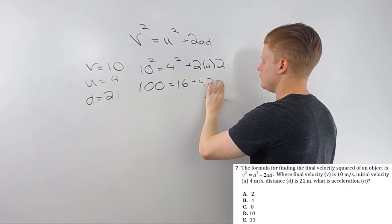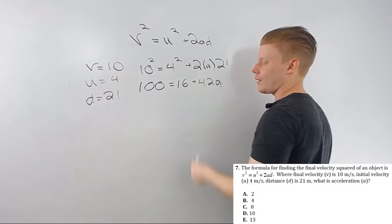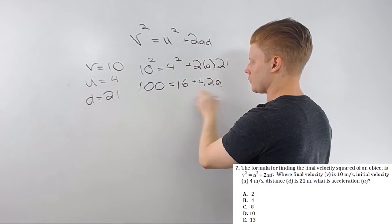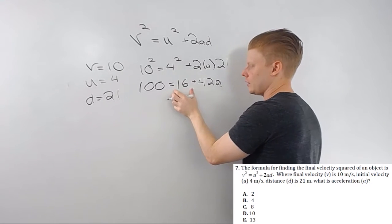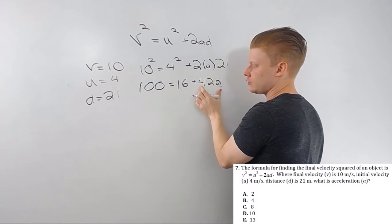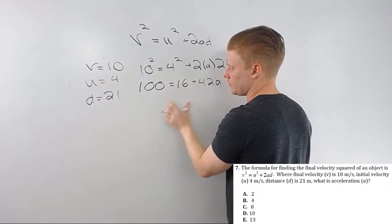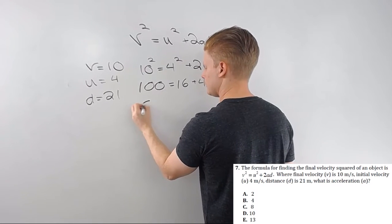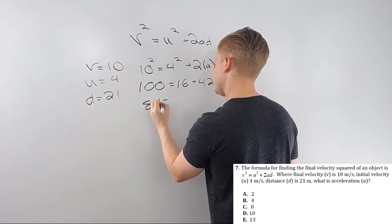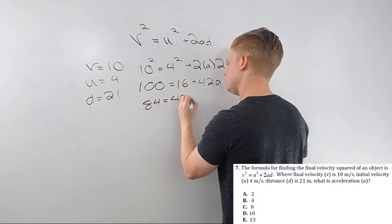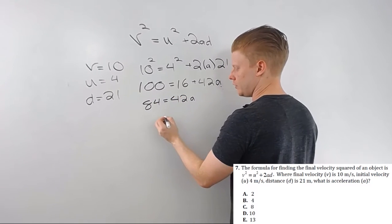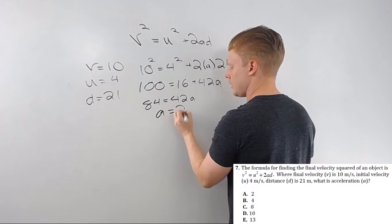Okay, so again, I kind of work backwards up the order of operations. So I want to isolate the a term, the term that has the variable I want to solve for. So I'm going to subtract 16 first. And then I divide by 42, a equals 2.